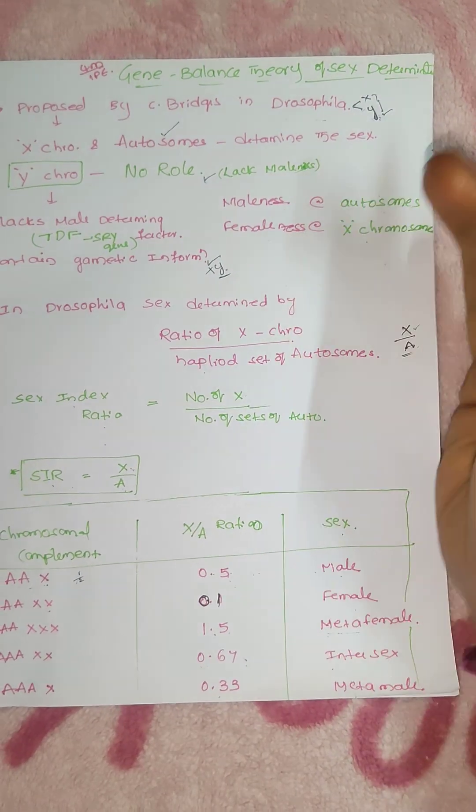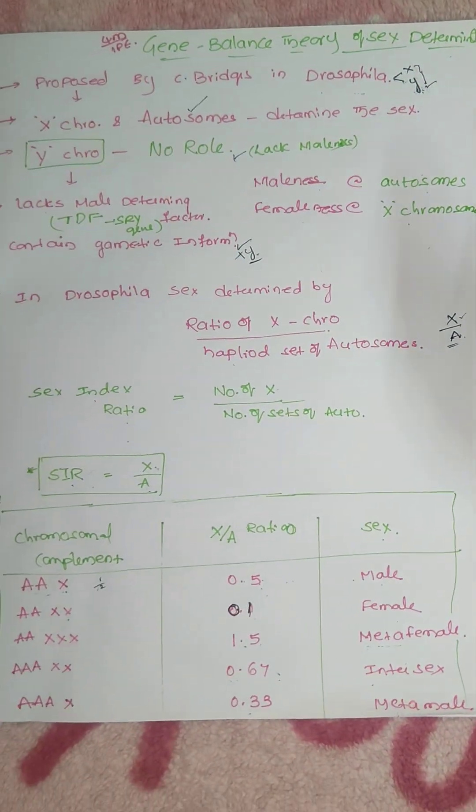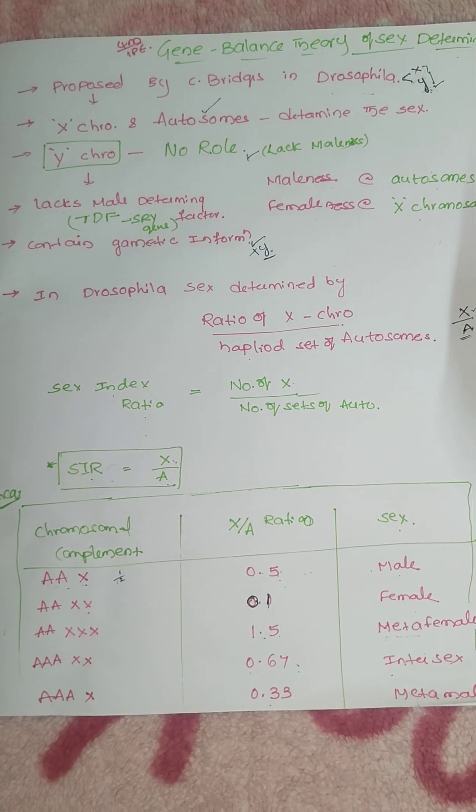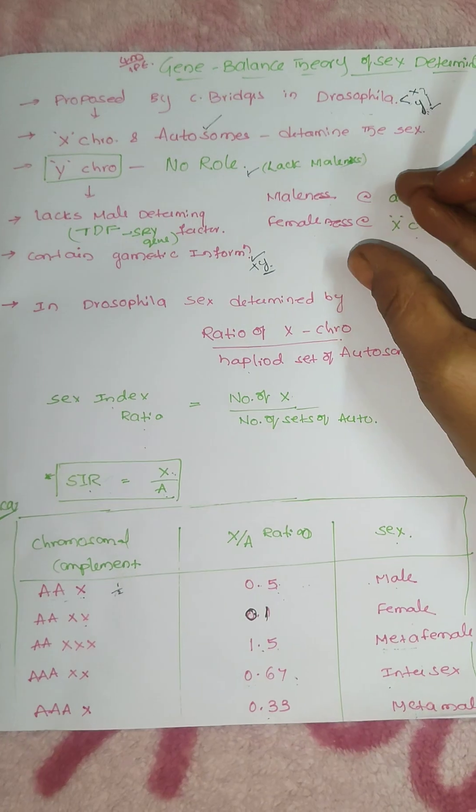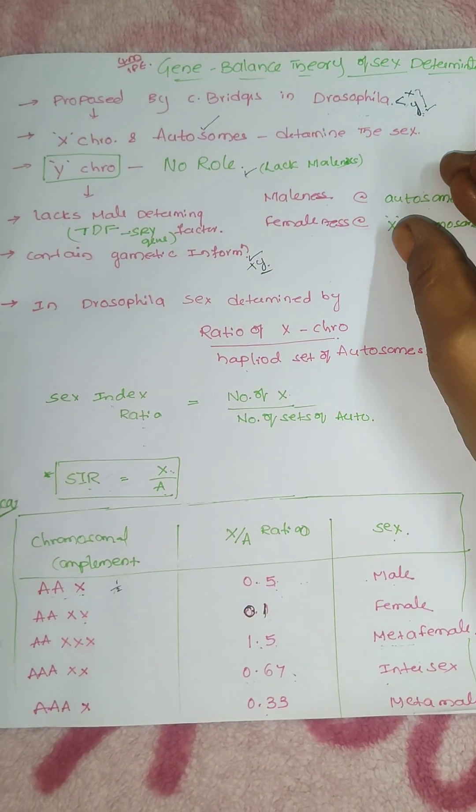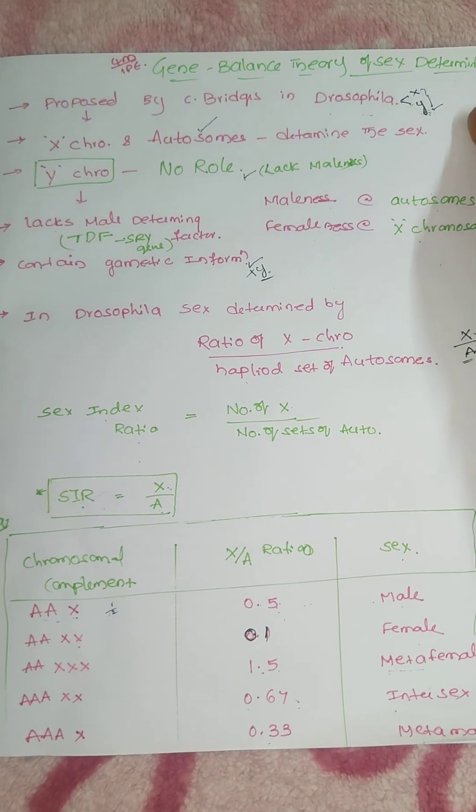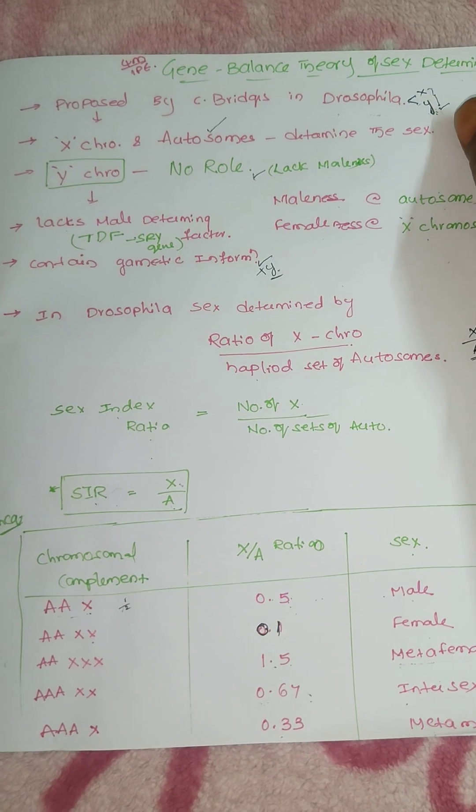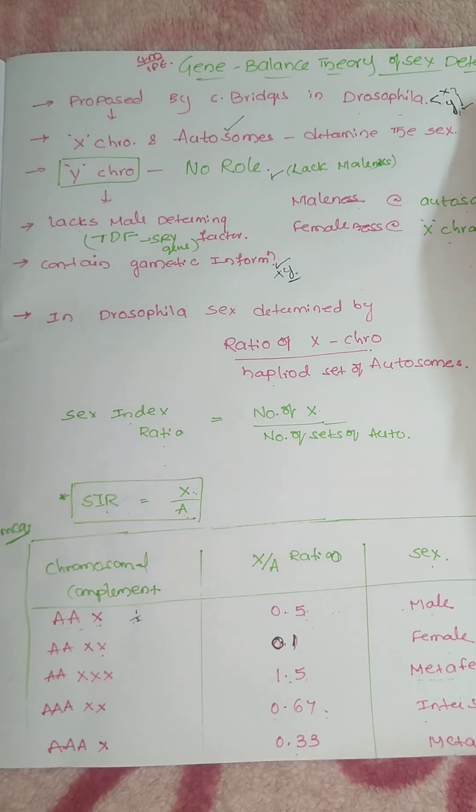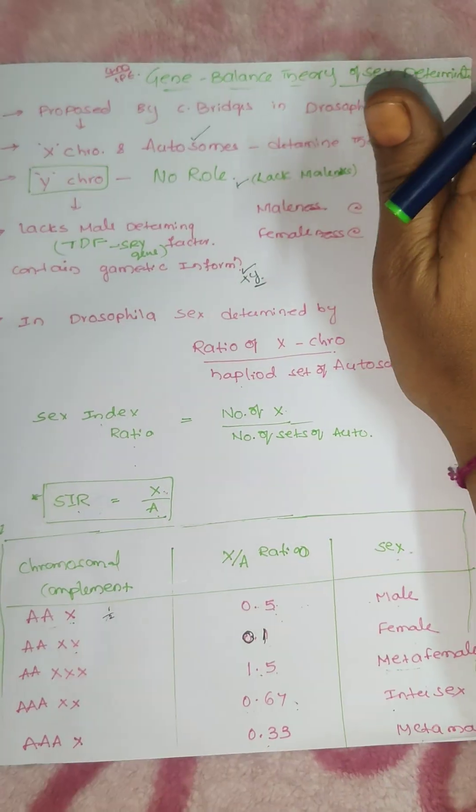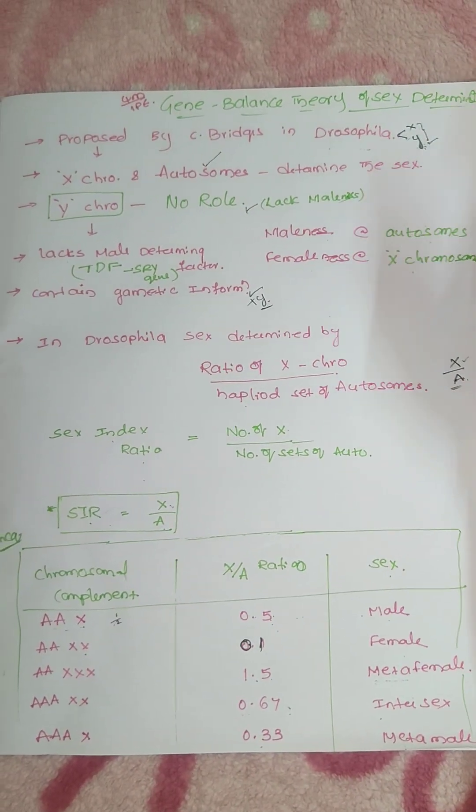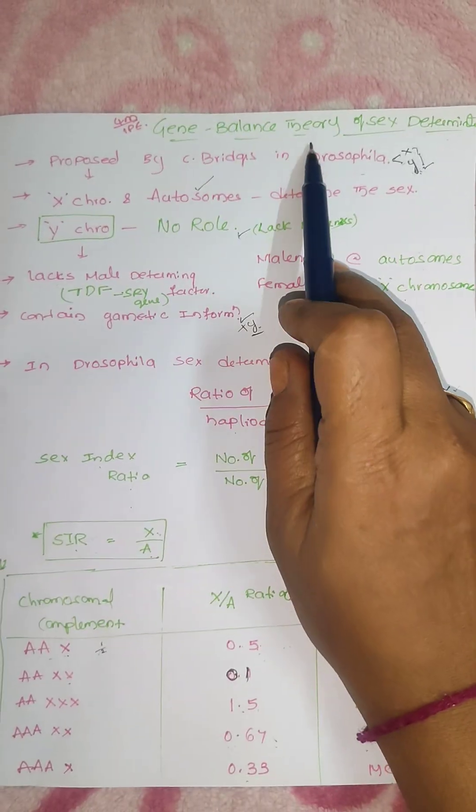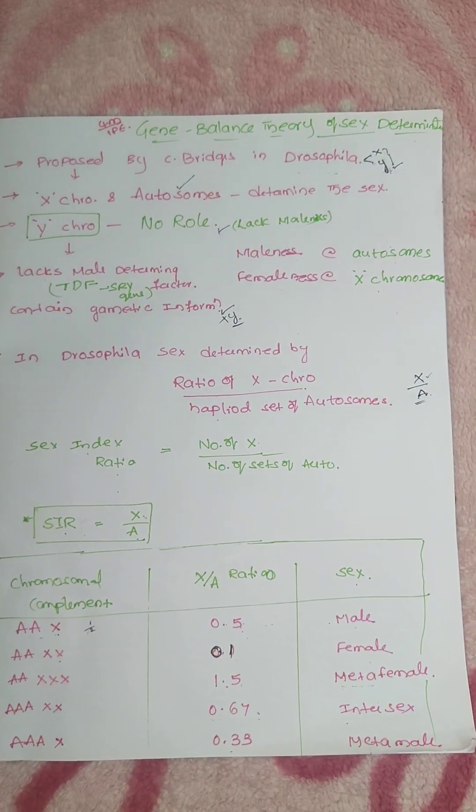So earlier we discussed the sex determination is done by the allosomes, that is X and Y chromosomes. The autosomes are similar in male and female but the allosomes differ and they can decide the sex of the offspring. So that is the main concept but here that is not always true. That is the exception in the gene balance theory of sex determination.